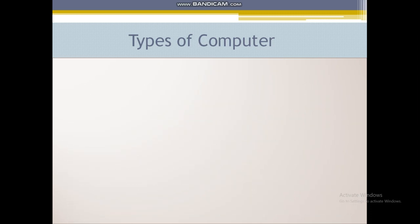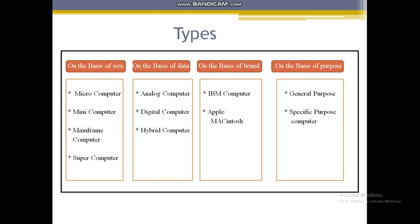Let's see what the types of computers are. Computers are divided on the basis of size, on the basis of data, on the basis of brand, and on the basis of purpose. On the basis of size, there are micro computers, mini computers, mainframe computers, and super computers.